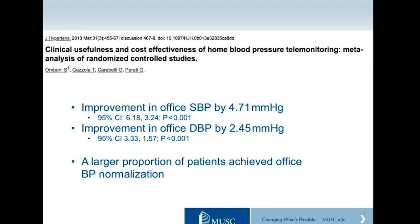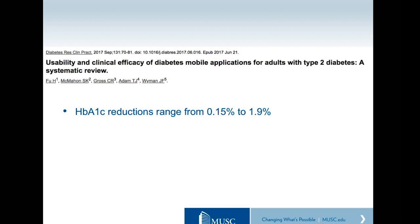The meta-analysis also reported a larger proportion of patients achieving blood pressure normalization. For diabetes, a systematic review and meta-analysis looking at A1C reduction over time showed a significant reduction — as much as 2% — though the follow-up time was variable.